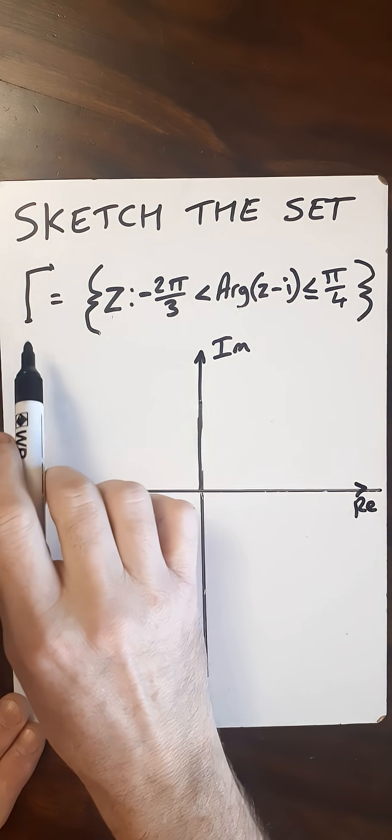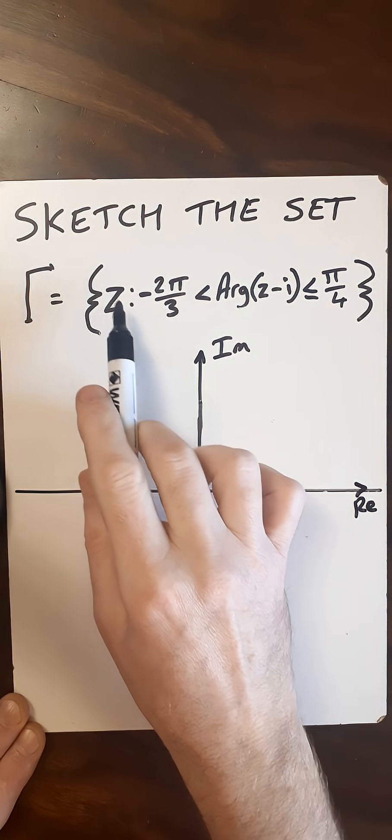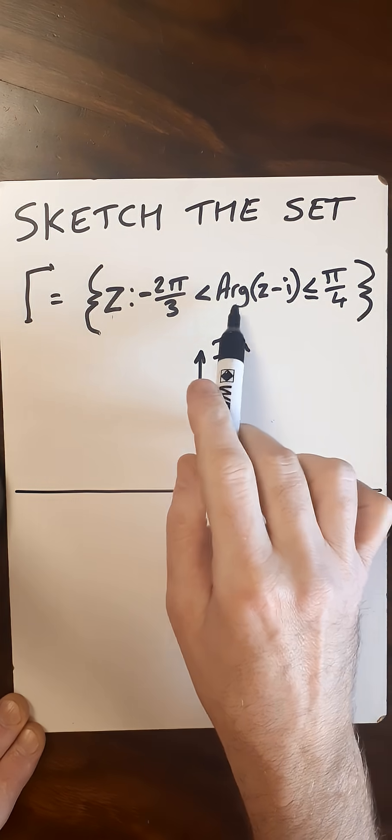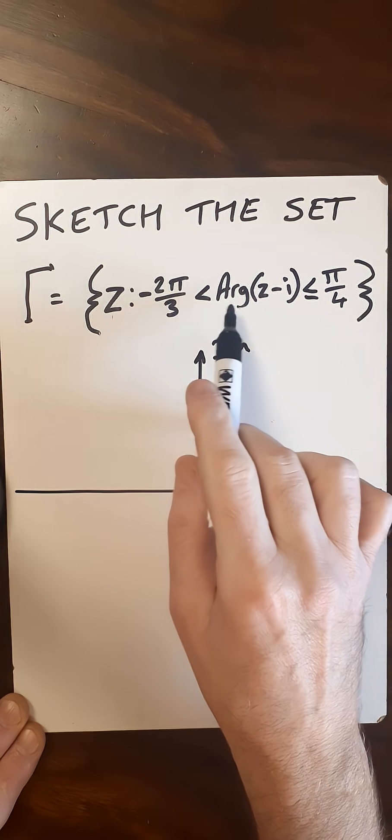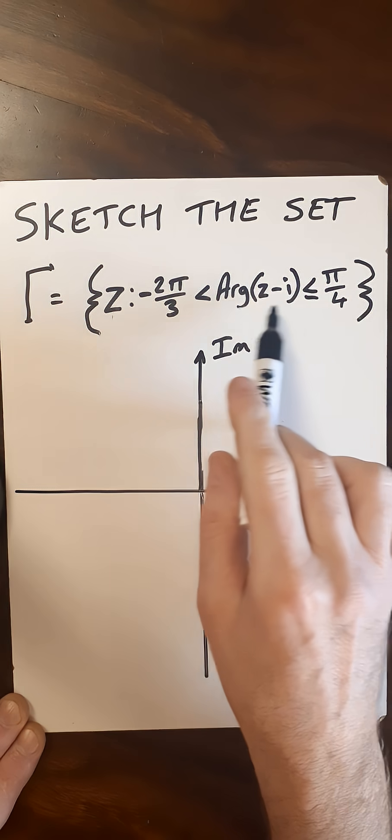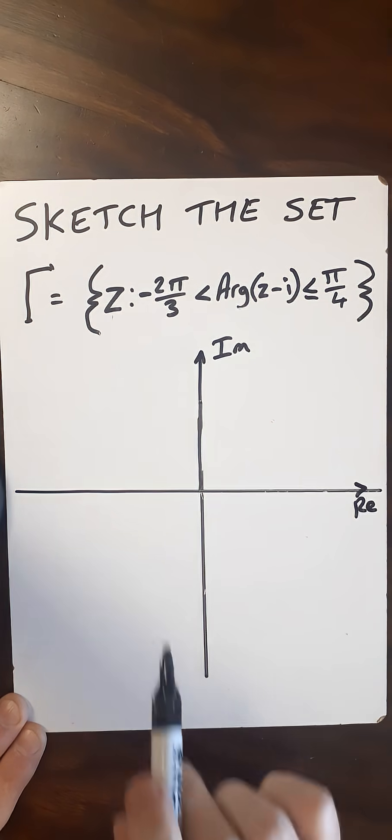So here we're going to sketch the set gamma, and gamma is defined as the complex number z where the principal argument of z minus i is greater than minus 2 pi over 3 and less than or equal to pi over 4.